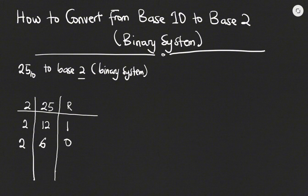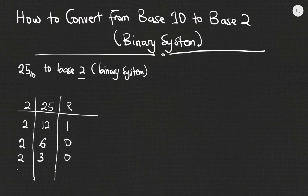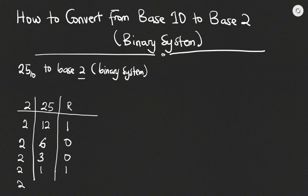How many times would 2 go into 6? It will go 3 times, which is exactly 6, so remainder is 0. How many times would 2 go into 3? It will go in once, which is 2, remainder 1. How many times would 2 go into 1? It cannot, so we write down 0 and then bring the 1 over to the end.